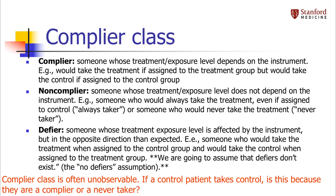Before I can derive the estimate, I have to explain the concept of complier class. It's important to understand that instrumental variable analysis can only estimate effects for people we call compliers. Compliers are the people whose exposure is actually influenced by the instrument. In a randomized trial, this would just be someone who's going to do whatever the researchers tell them to.